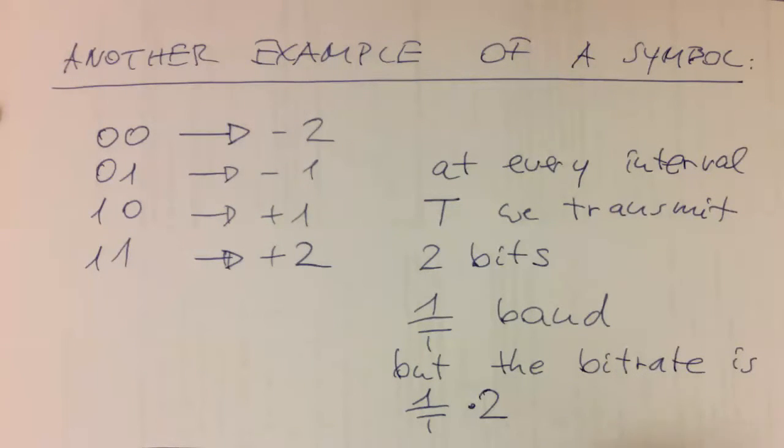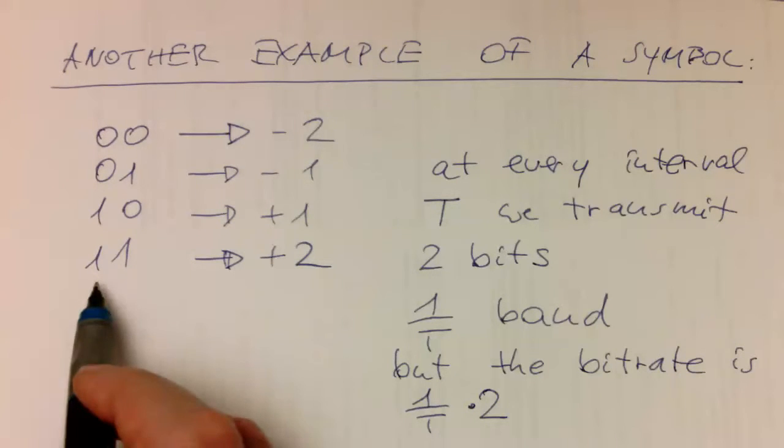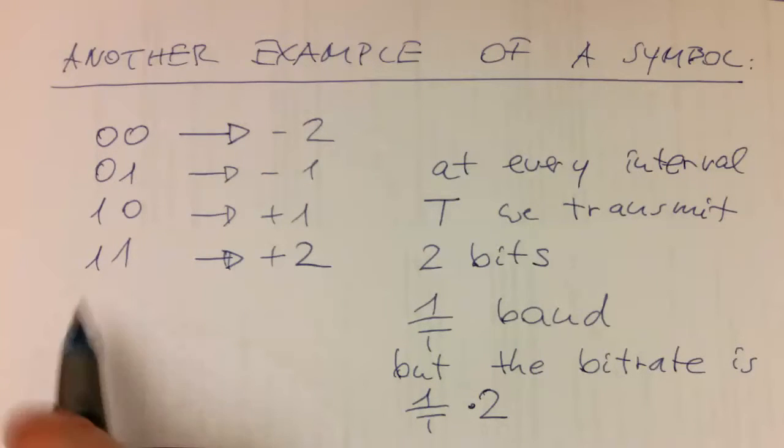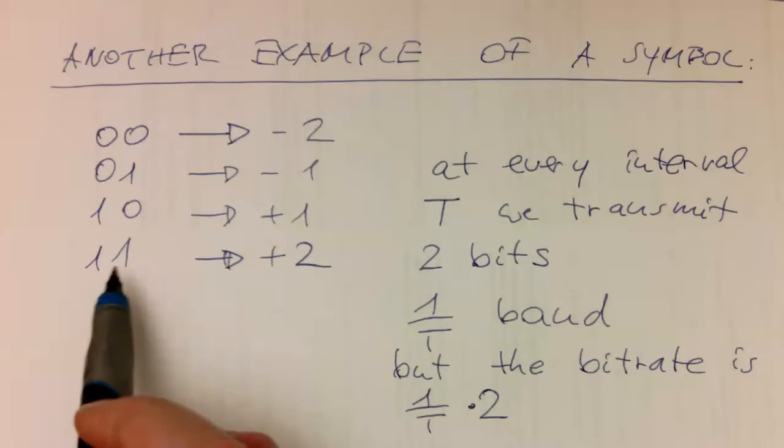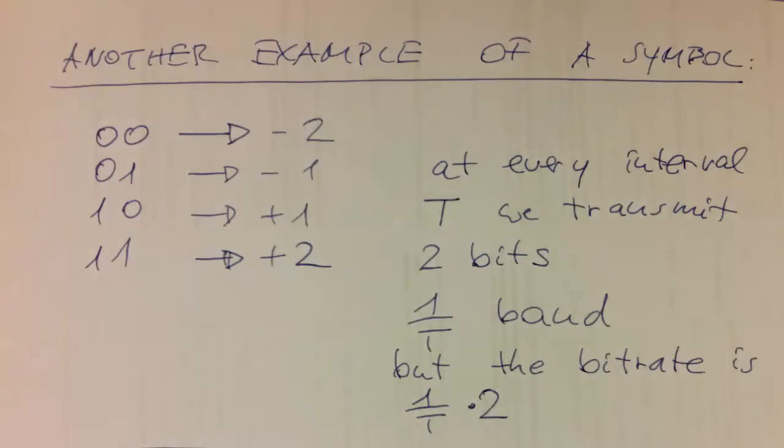Because in this case we're transmitting two bits per symbol, we need to be careful with that. Obviously we can transmit many more bits per symbol, and the idea of digital communications is to squeeze even more bits per symbol in there, up to a theoretical limit.